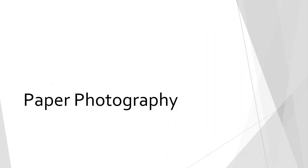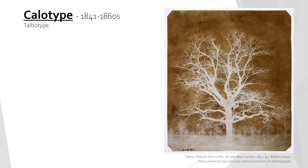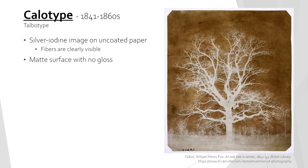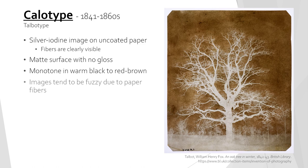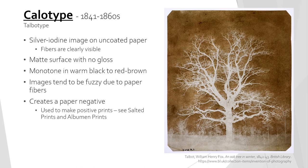Next we will cover paper-based photographs. Calotypes were used from 1841 to the 1860s. They are silver iodine images directly on uncoated paper, meaning the paper fibers will be clearly visible and the paper will have a matte surface with no gloss. The image is a monotone ranging from warm black to red-brown and tends to be fuzzy in appearance due to the paper fibers. Calotypes are photographic negatives and were used to create positive prints such as salted paper prints and albumen prints, which we will cover next.